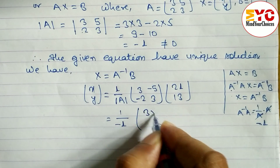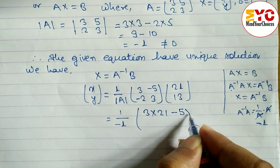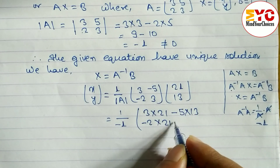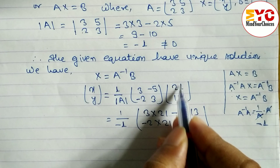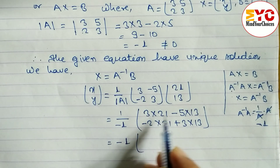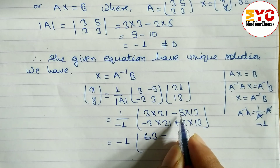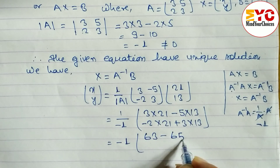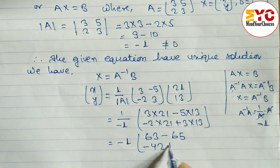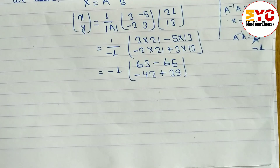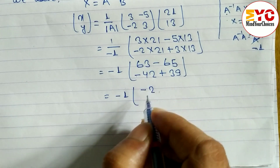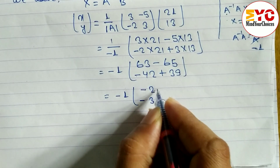Now we multiply the matrices. First row, first column: 3 times 21 minus 5 times 13. Second row, second column: minus 2 times 21 plus 3 times 13. Calculating: 63 minus 65 equals minus 2, and minus 42 plus 39 equals minus 3. We then multiply by 1 over minus 1, which is minus 1.